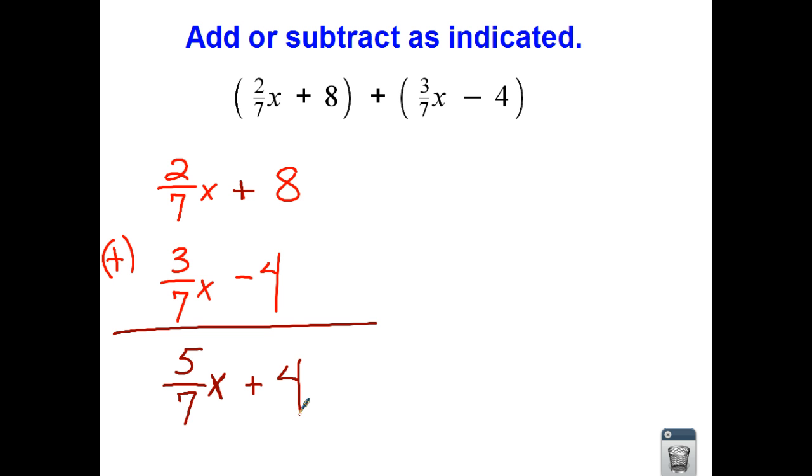Now, we can't put the 4 with the 5 sevenths x. I call them apples and oranges. If it has an x with it, it is different than the constant that doesn't have an x attached to it. So final answer, 5 sevenths x plus 4.